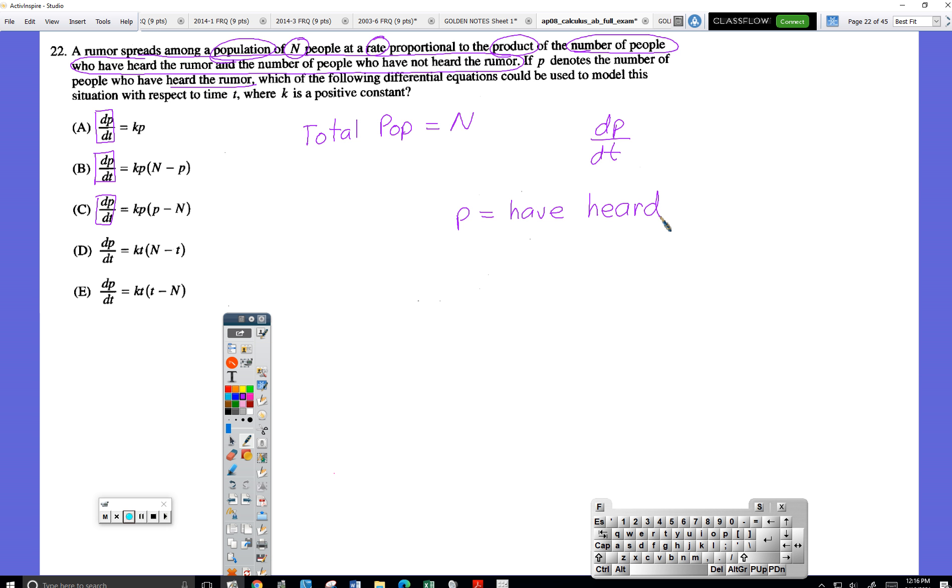Are we good? Cool. Product of the number who have heard the rumor multiplied by those who have not heard the rumor. So that's where they come up with this thing. Oh, okay. Because N is all the people. P is how many have heard the rumor. Therefore, those who haven't have got to be N minus P.